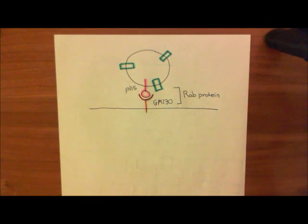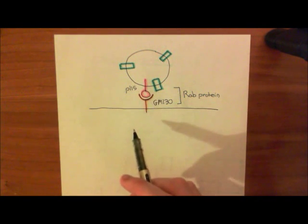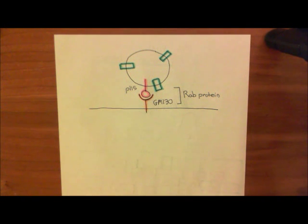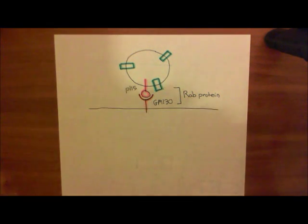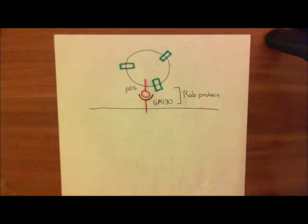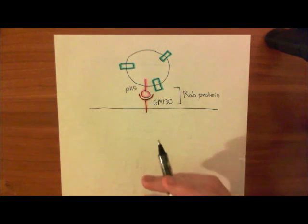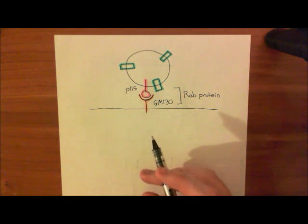It's not the RAB proteins, however, that promote the fusion of this vesicle with the Golgi membrane. Instead, what promotes the fusion is SNARE proteins. You've probably heard of SNARE proteins in the context of synaptic fusion — the fusion of synaptic vesicles with the plasma membrane — but they are involved here too. It's a different set of SNARE proteins, but they're very similar.